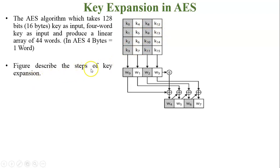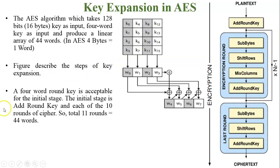This figure describes the steps of key expansion. A four word round key is acceptable for the initial stage. Now see the second figure. This is the encryption of given plaintext using AES. Add round key will be used in the initial stage before the encryption round starts. A four word round key is acceptable for the initial stage.